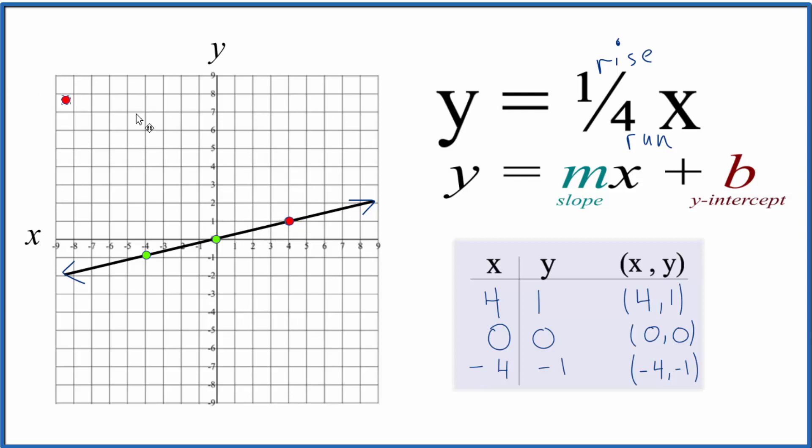From there, we can go up one again and over one, two, three, four. And these points, they're on our line. Likewise, we could go in the opposite direction. We can start at this y-intercept, go down one and over one, two, three, four. That shows up. And then down one and over one, two, three, four. And that shows up on our line as well.